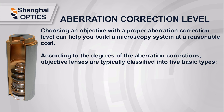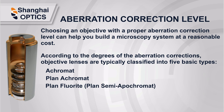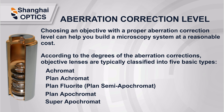The degrees of aberration corrections determine the optical performance of an objective lens. According to the degrees of aberration corrections, objective lenses are typically classified into five basic types: Achromat, Plan Achromat, Plan Fluorite, Plan Apochromat, and Super Apochromat. Choosing an objective with a proper aberration correction level can help you build a microscopy system at a reasonable cost.